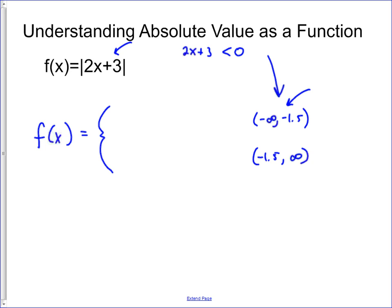You plug in negative 300, you get negative 600 plus 3, which is negative 597. Every x value in that interval makes for a negative output.